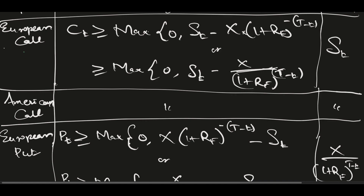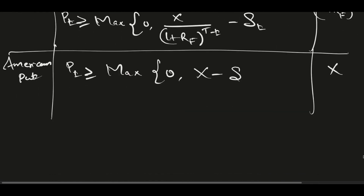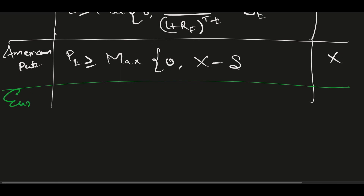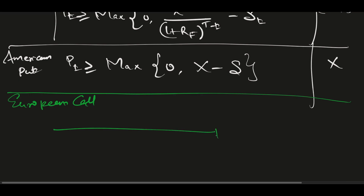Let's take the European call example. Suppose you entered a call option for three months with a strike price of 1000. After one month — this is smaller t — the spot price S(t) has risen to 1050. The market was bullish. Capital T is the total expiry of three months, and smaller t is right now, one month in.